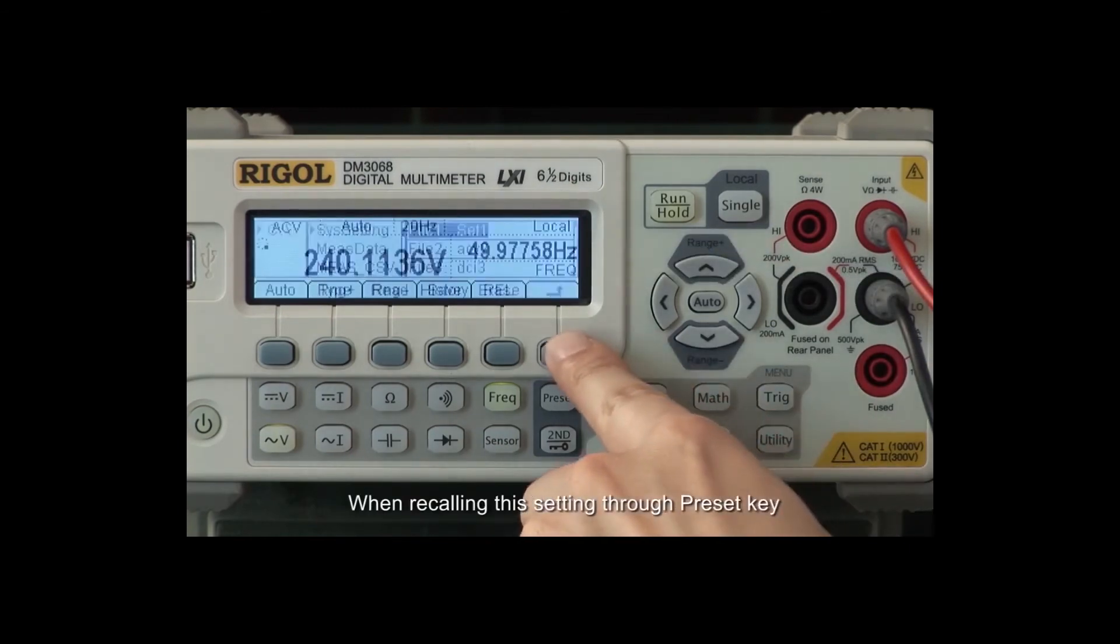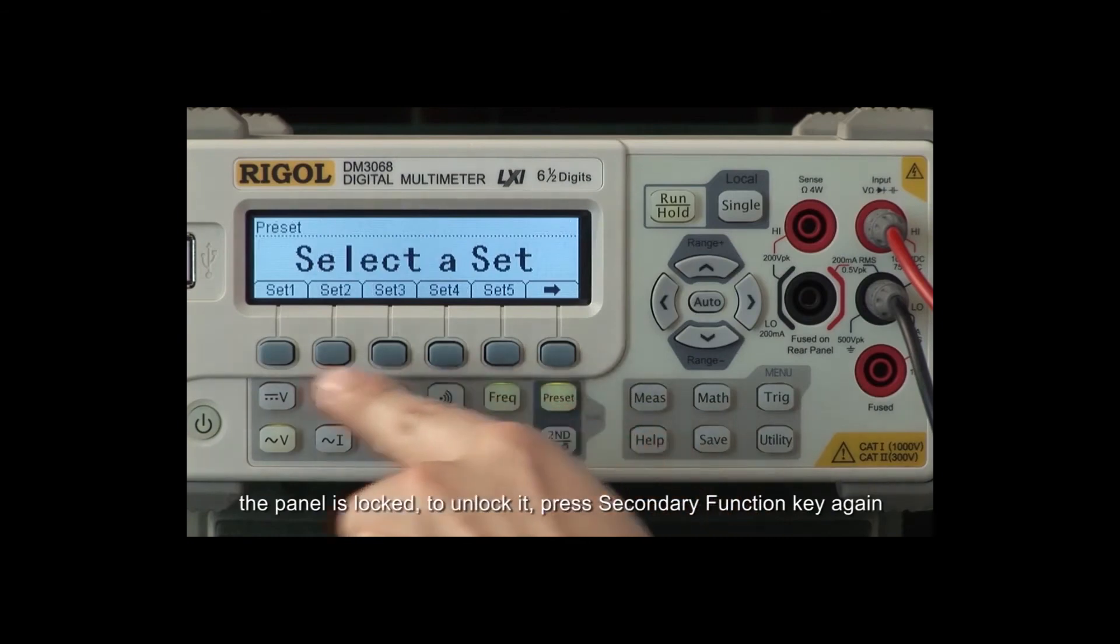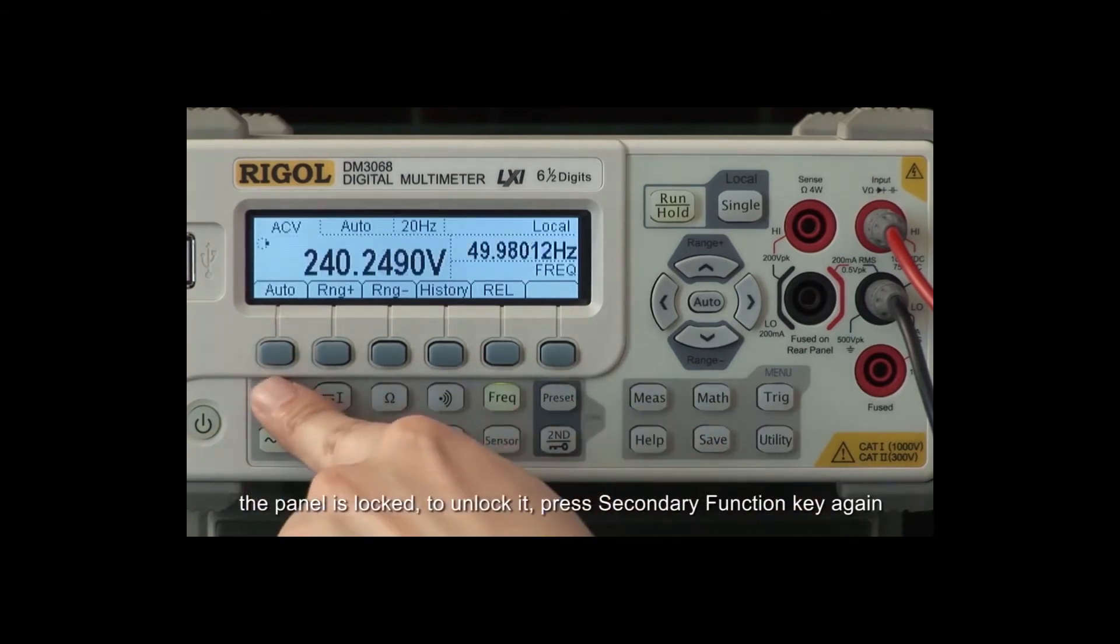When recalling this setting through the preset key, the panel is locked. To unlock it, press the Secondary Function Key again.